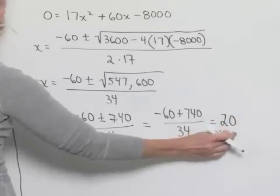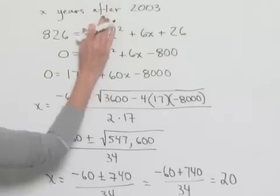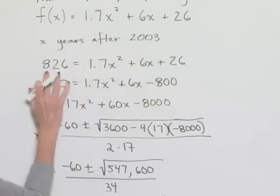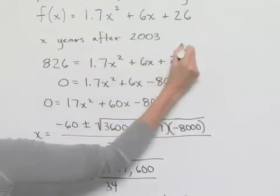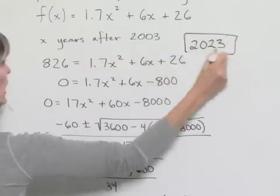And so now let's look back at what this means in context. We were trying to find the number of years after 2003 where we would end up with 826 bicycle-friendly communities. If we go 20 years after 2003, that means we're looking at the year 2023 as our result.